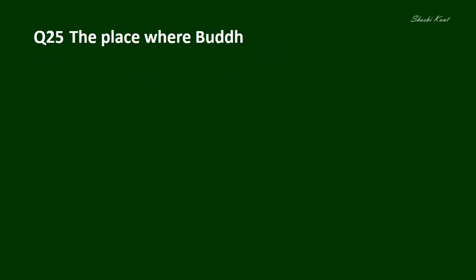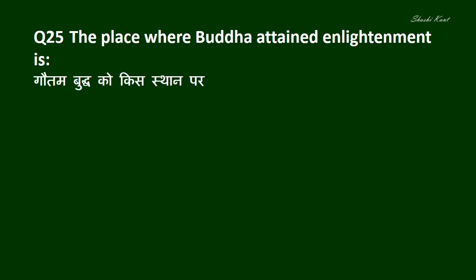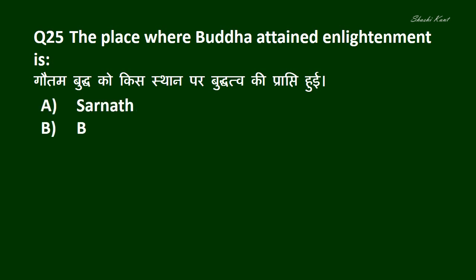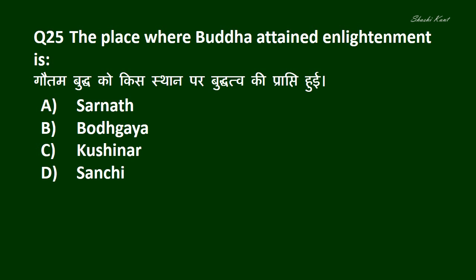Question No. 25: The place where Buddha attained enlightenment is — गौतम बुद्ध को किस स्थान पर बुद्धत्व की प्राप्ति हुई? A. Sarnath, B. Bodh Gaya, C. Kushinagar, D. Sanchi. और इसका सही जवाब है B. Bodh Gaya.